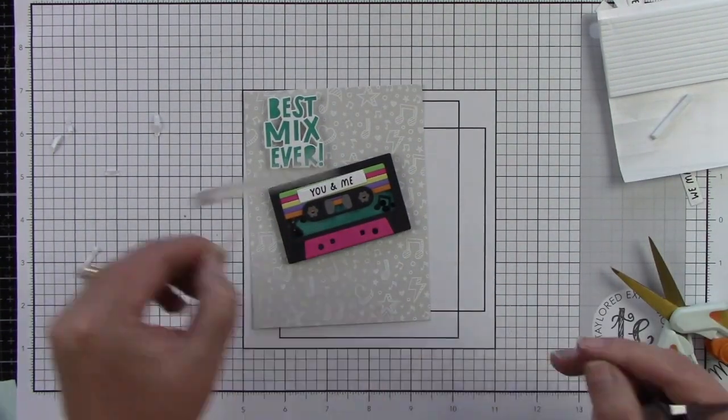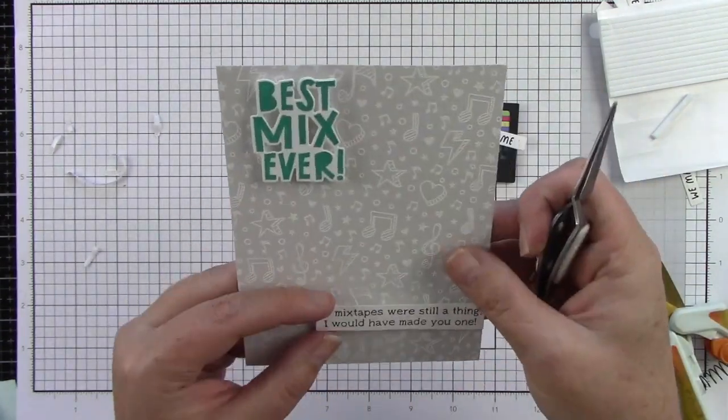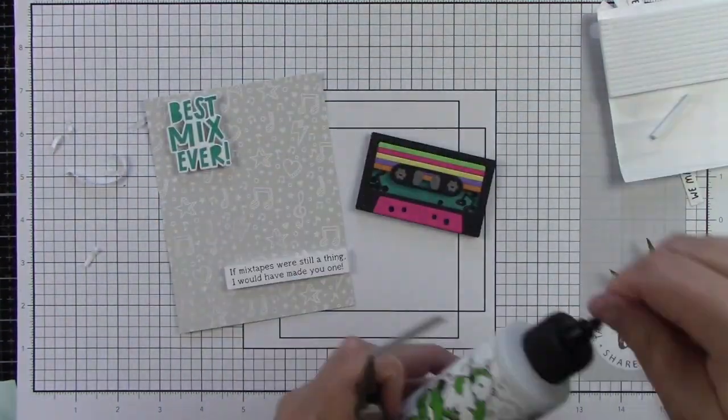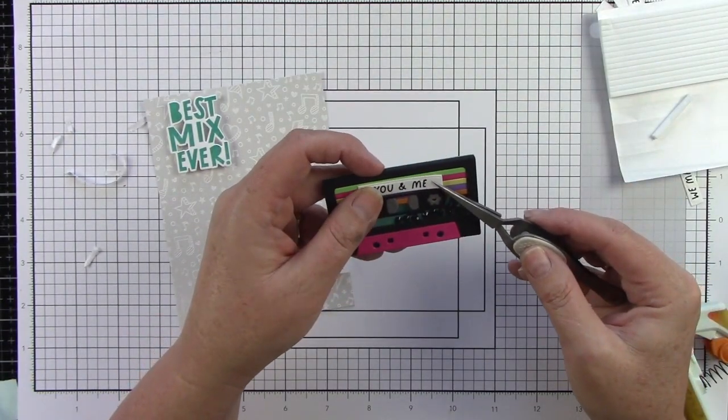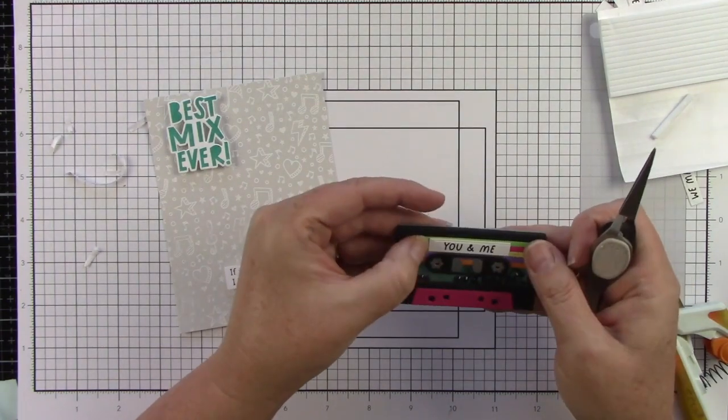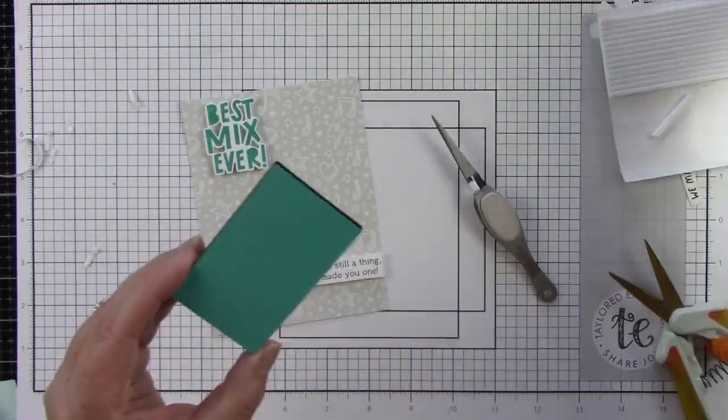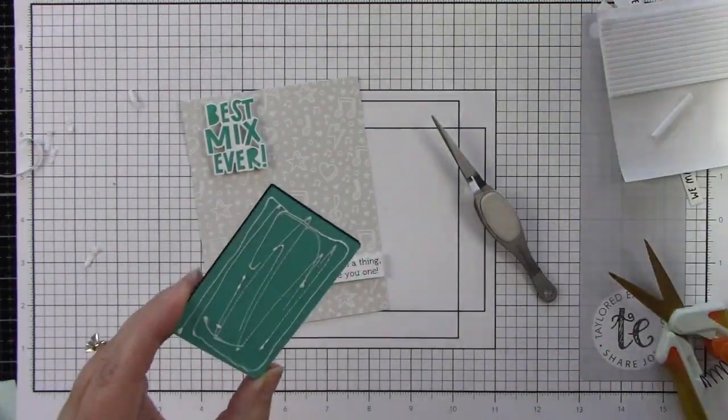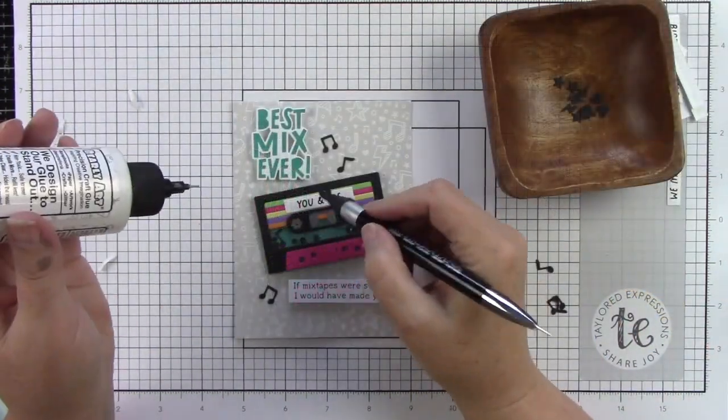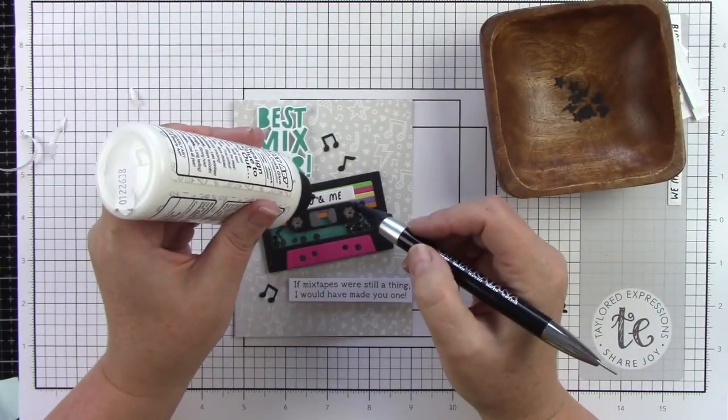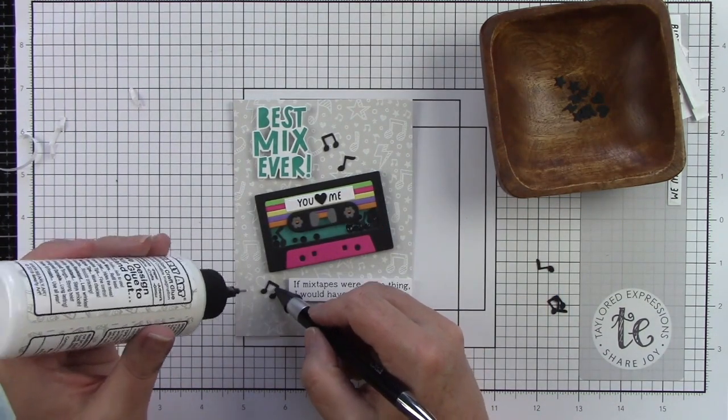Let's add some foam sticky strips behind this sentiment and then I'm just going to place the tape deck on an angle in between those two sentiments. Let's add the sentiment that says 'you and me' and I'm actually going to add one of the little black hearts in the center right over the end because I just thought that would be really cute. I'm using some liquid glue to adhere that to the background because I want this to stay forever - remember it's a shaker and it's thick and heavy.